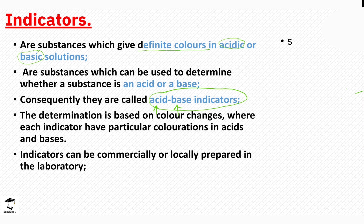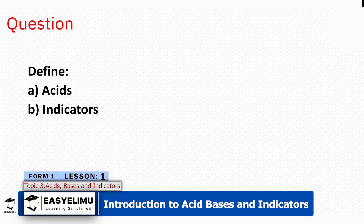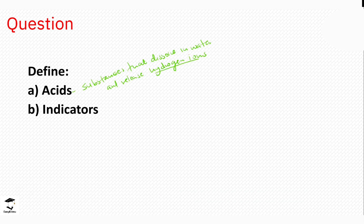Indicators can be made locally or commercially, and we will also see that distinction as we move on. Let's do one question to help us understand what we've been learning. The question is: define acids and define bases. Acids are substances that dissolve in water to release hydrogen ions.